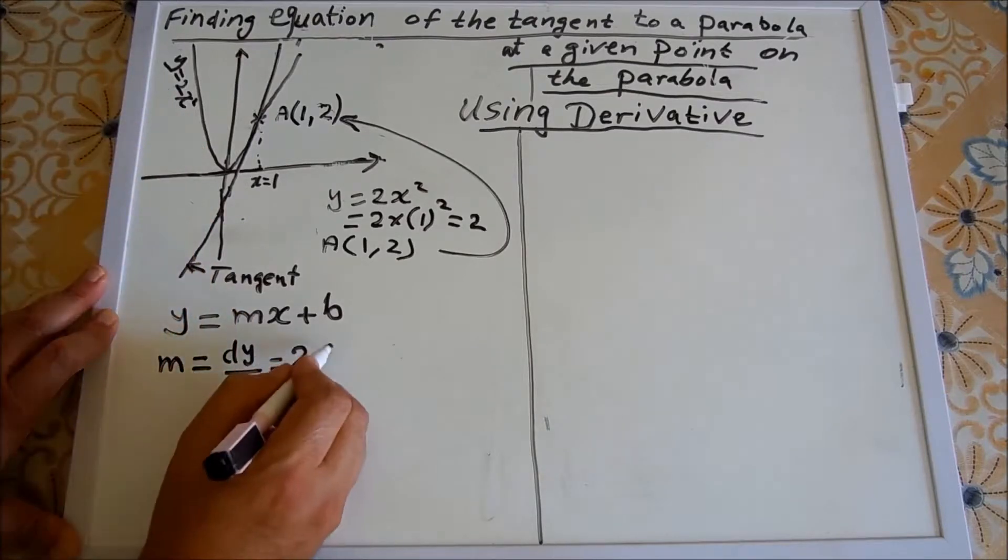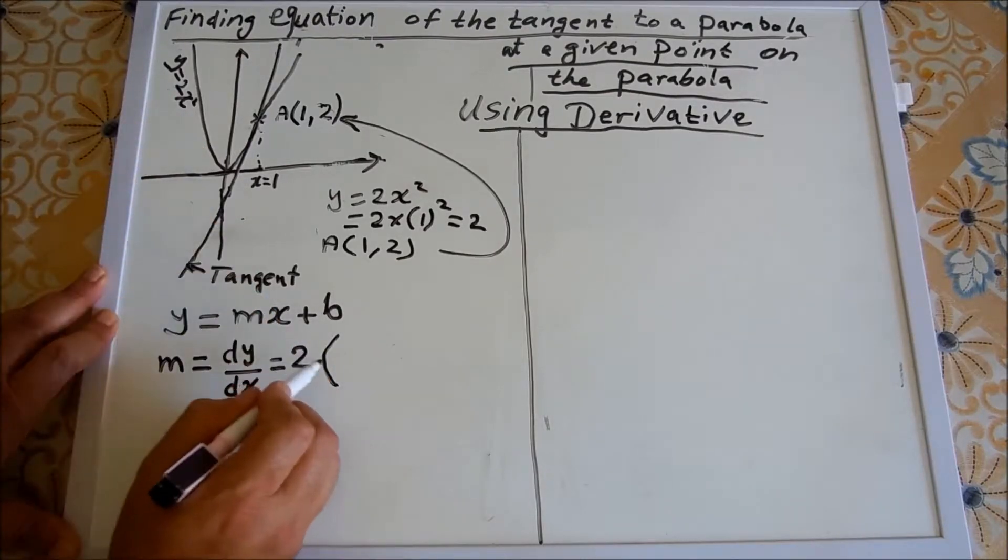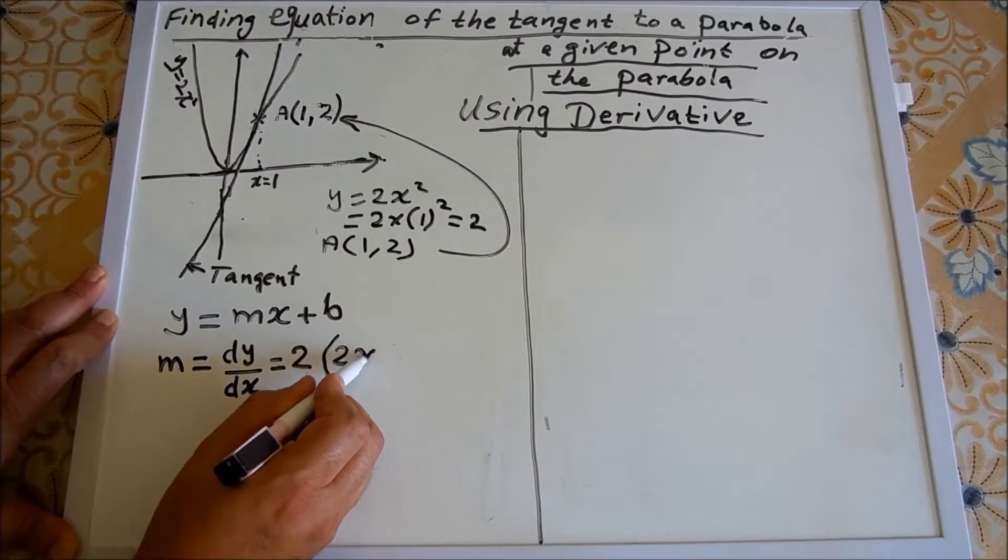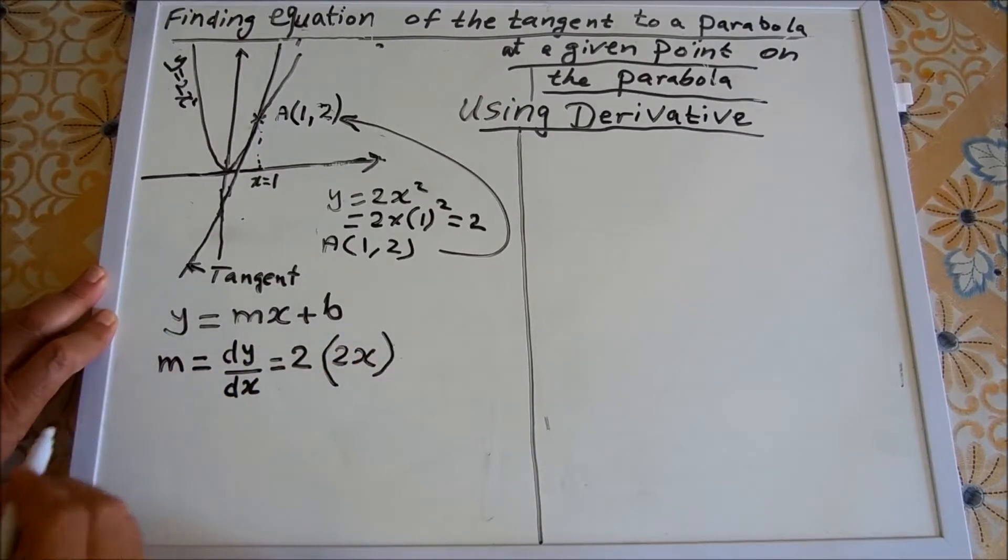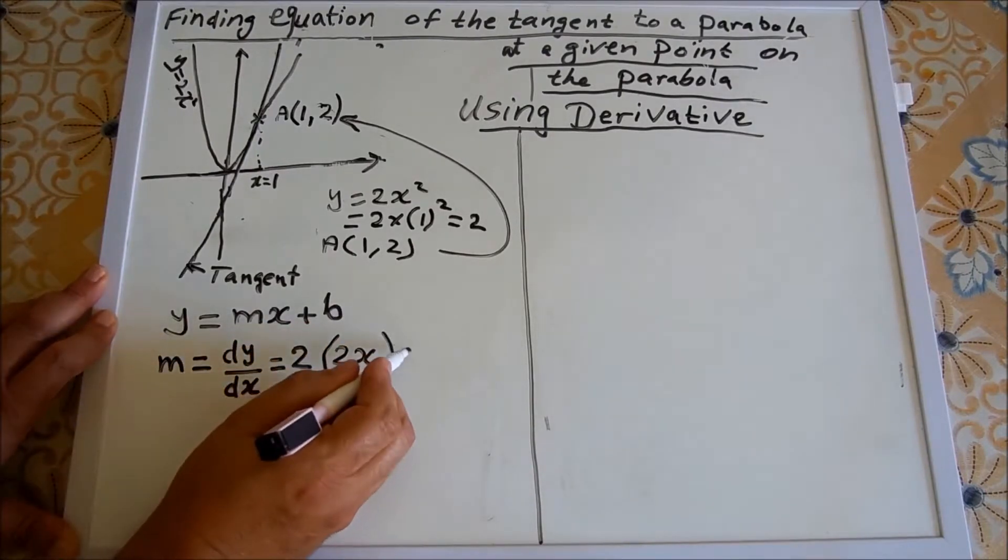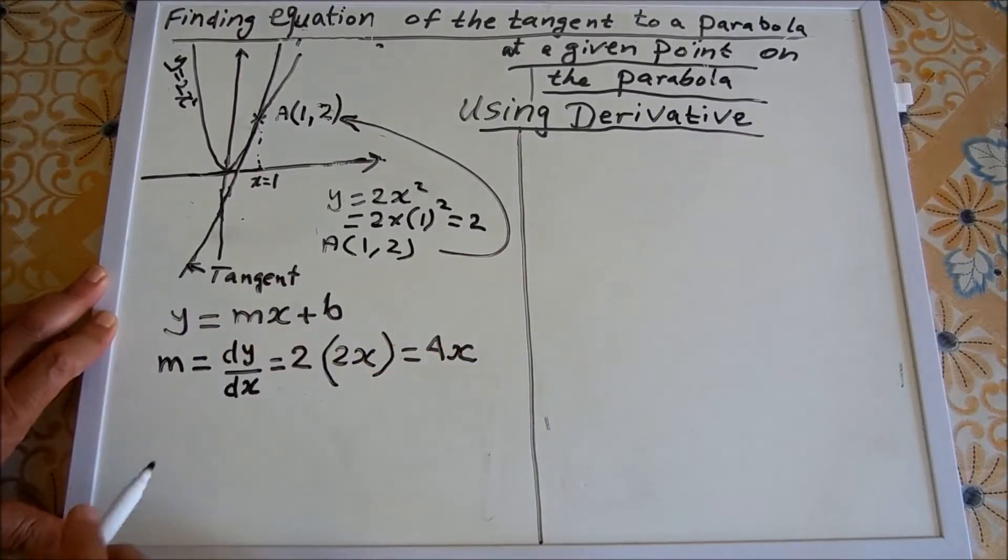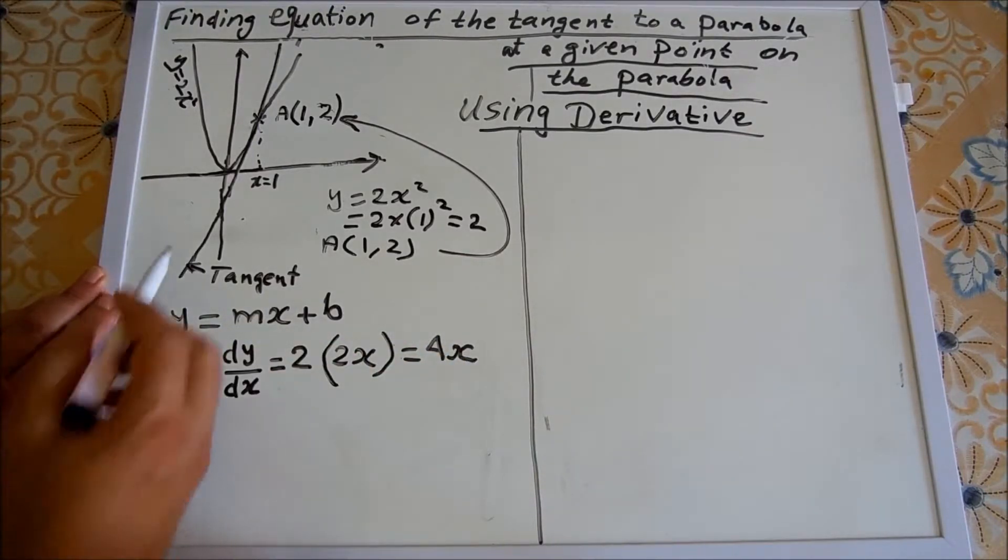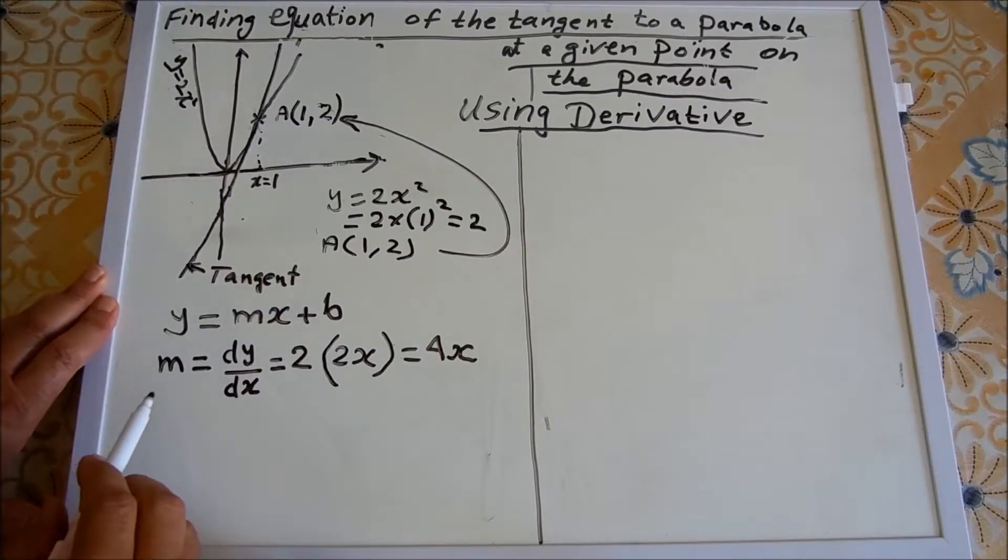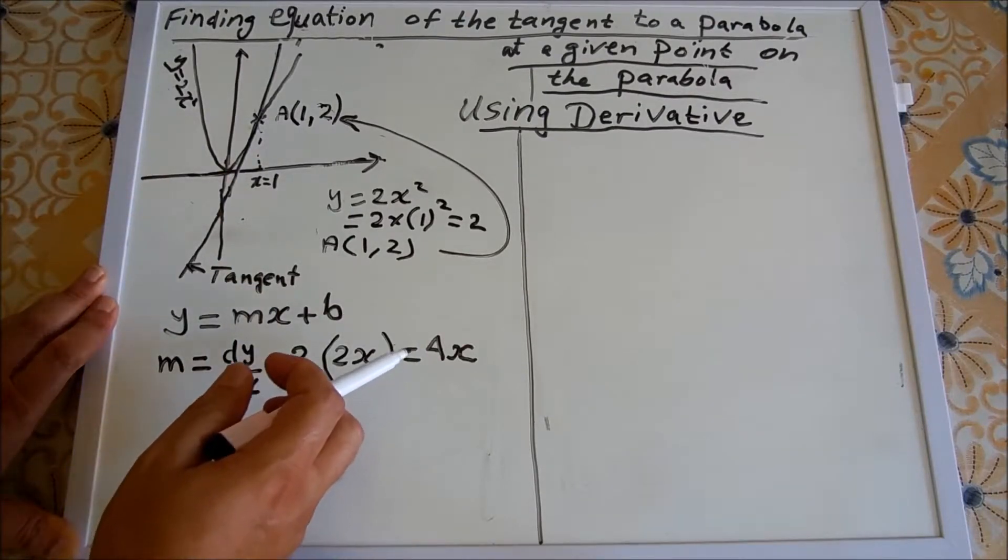Because we have 2 as a constant multiplied by 2x, which will give you 4x. So the gradient of the tangent is given in terms of x equals 4x.